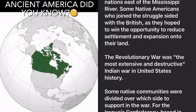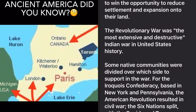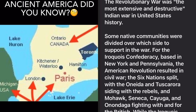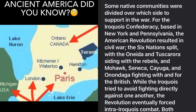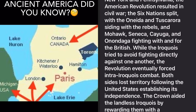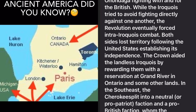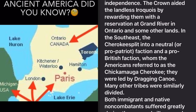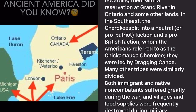Some Native communities were divided over which side to support in the war. For the Iroquois Confederacy, based in New York and Pennsylvania, the American Revolution resulted in civil war — the six-nation split — with the Oneida and Tuscarora siding with the rebels, and the Mohawk, Seneca, Cayuga, and Onondaga fighting with and for the British. While the Iroquois tried to avoid fighting directly against one another, the revolution eventually forced intra-Iroquois combat. Both sides lost territory following the United States establishing its independence. The Crown aided the landless Iroquois by rewarding them with a reservation at Grand River in Ontario and some other lands.